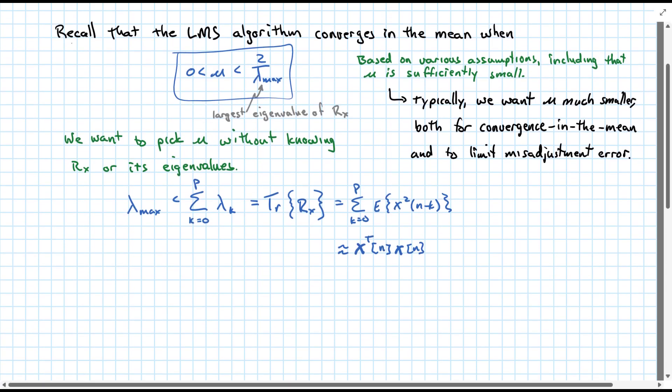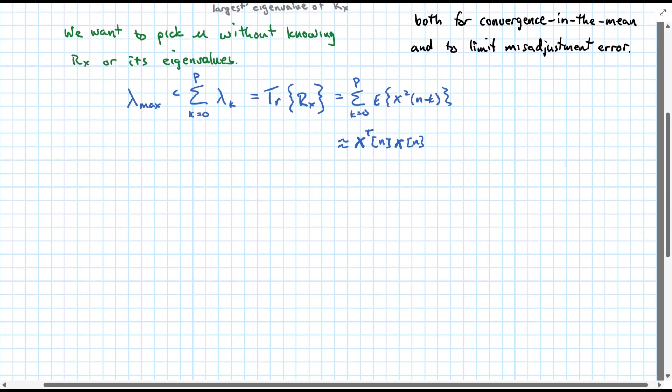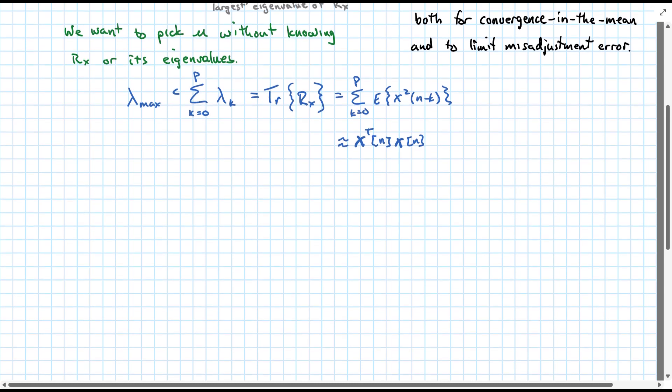Another thing to notice is that this boxed relationship, that mu must be less than 2 over lambda max, is for convergence in the mean, but for convergence of the mean square, we want mu to be less than 2 over the trace of Rx. So the fact that we are setting some bounds on lambda max as less than the trace all works together so that what we come out with should guarantee that we converge in the mean and have good mean square performance.